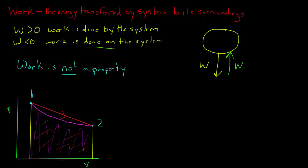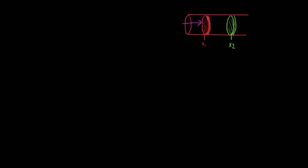Let's evaluate the work of a closed system done on a piston-cylinder assembly. We have a piston and a cylinder, and the piston is going to move from point X1 to point X2. We define our closed system as the gas inside the piston-cylinder assembly. As the cylinder moves, the gas inside is expanding and exerting a normal force onto the piston, and this force is equal to some pressure times the area of the cylinder.